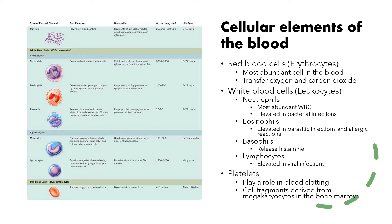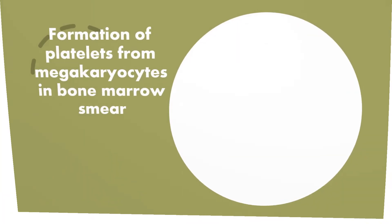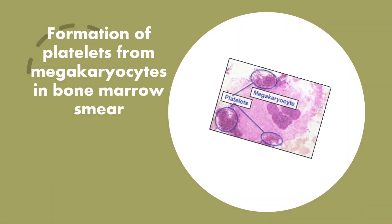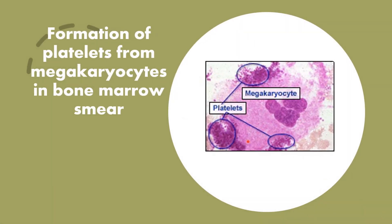Whenever you cut yourself, platelets rush in and form a plug along with other coagulation factors. Platelets are cell fragments derived from megakaryocytes in the bone marrow. Here's a picture of a megakaryocyte on a bone marrow smear giving rise to platelets, which are fragmenting off and going into the bloodstream.